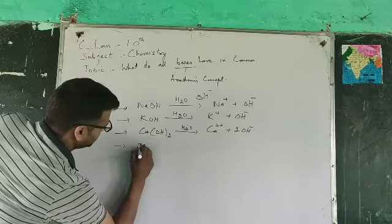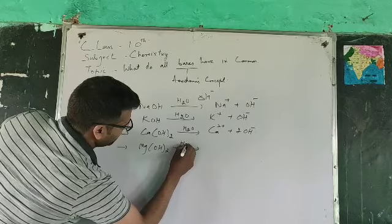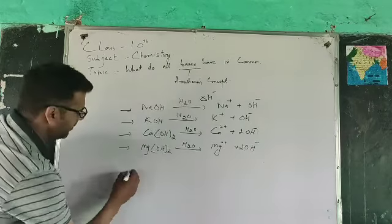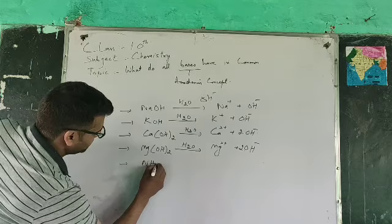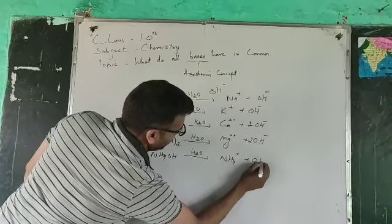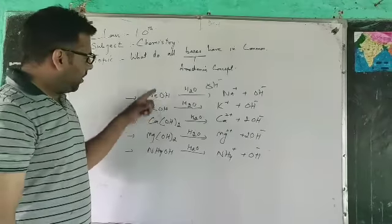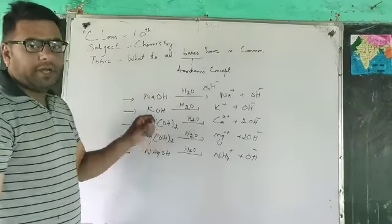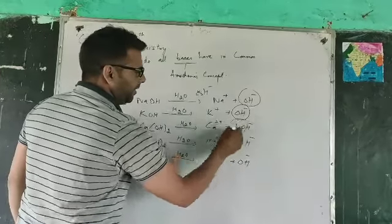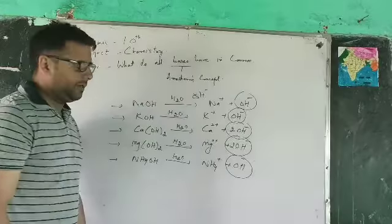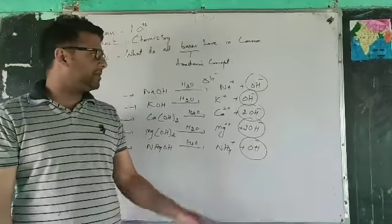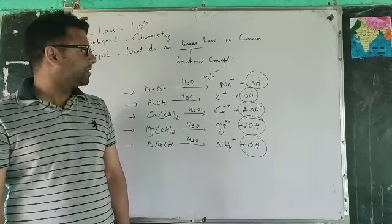In the same way, we have magnesium hydroxide. When it is dissolved in water, it forms magnesium dipositive ions along with hydroxide ions. We also have ammonium hydroxide, NH₄OH. When dissolved in water, it forms ammonium ion NH₄⁺ plus OH⁻. So all these bases have one common thing: when dissolved in water, they all provide the hydroxide ion. The hydroxide ion is the common property of all bases, according to the Arrhenius concept.